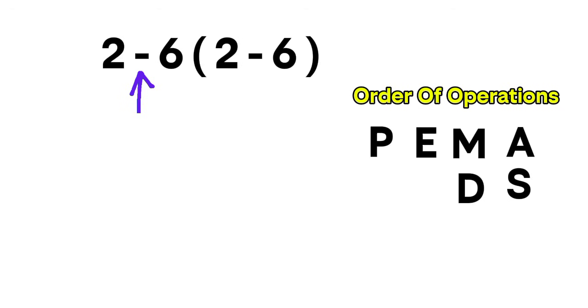So first, the parentheses. Inside the parentheses, 2 minus 6 equals negative 4.